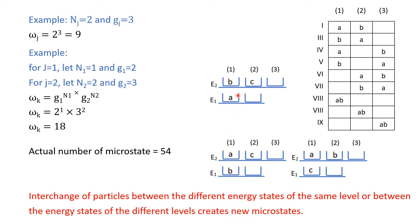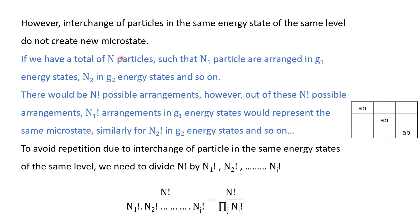Interchanging a particle between two different energy states of the same level or between energy states of different energy levels creates new microstates — you can see here that interchanging those particles creates new configurations. However, interchanging particles within the same energy state of the same level does not create a new microstate. If you have a total number of N particles such that N1 particles are distributed in G1 energy states, N2 in G2, and so on, then there would be N! possible arrangements.